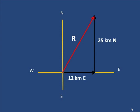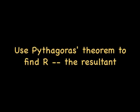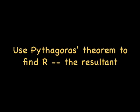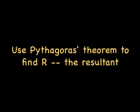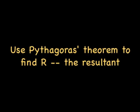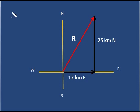And this is a right angle triangle. I use Pythagoras theorem to find R, the resultant. So Pythagoras theorem. We know this. We know C squared is A squared plus B squared.